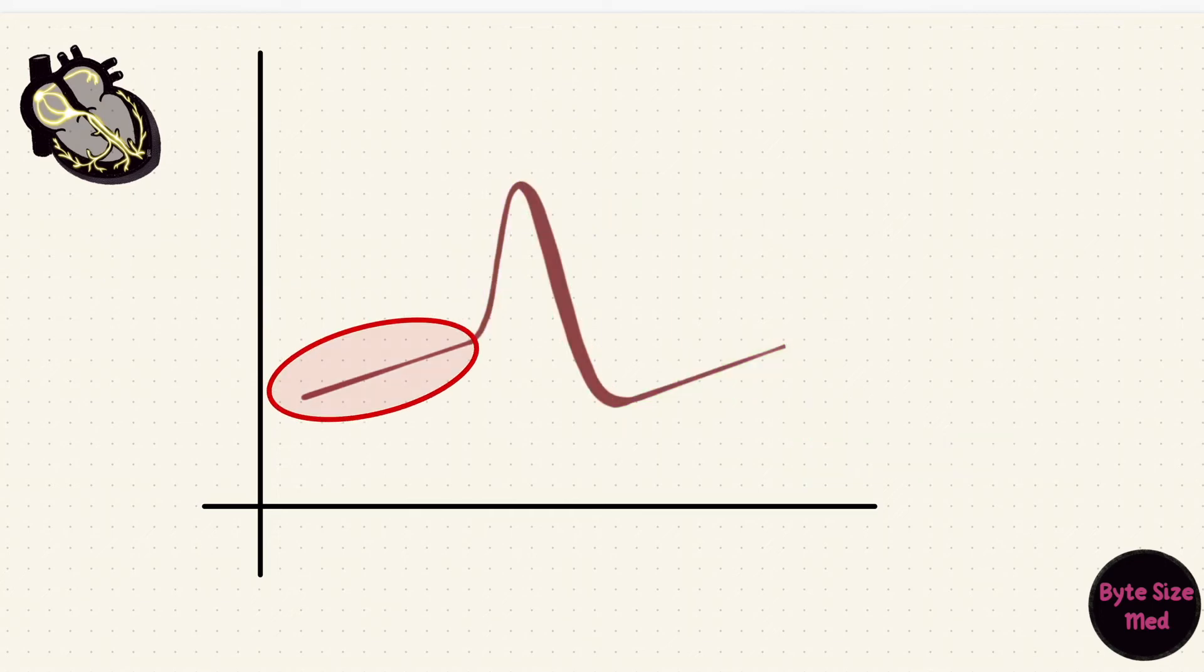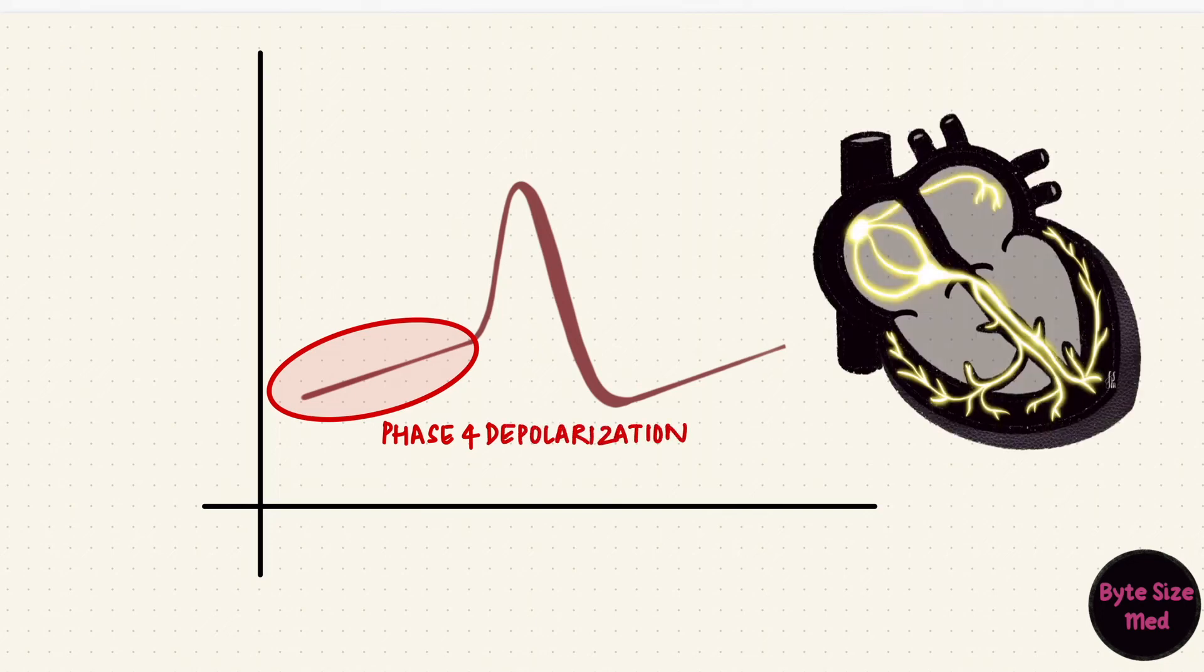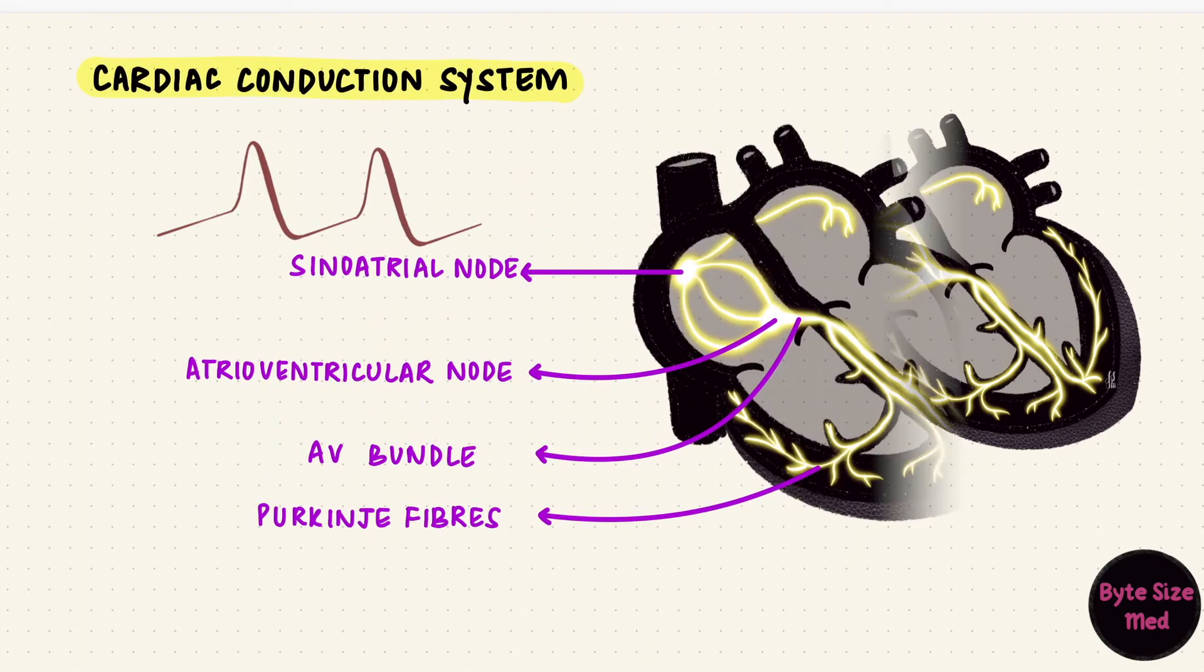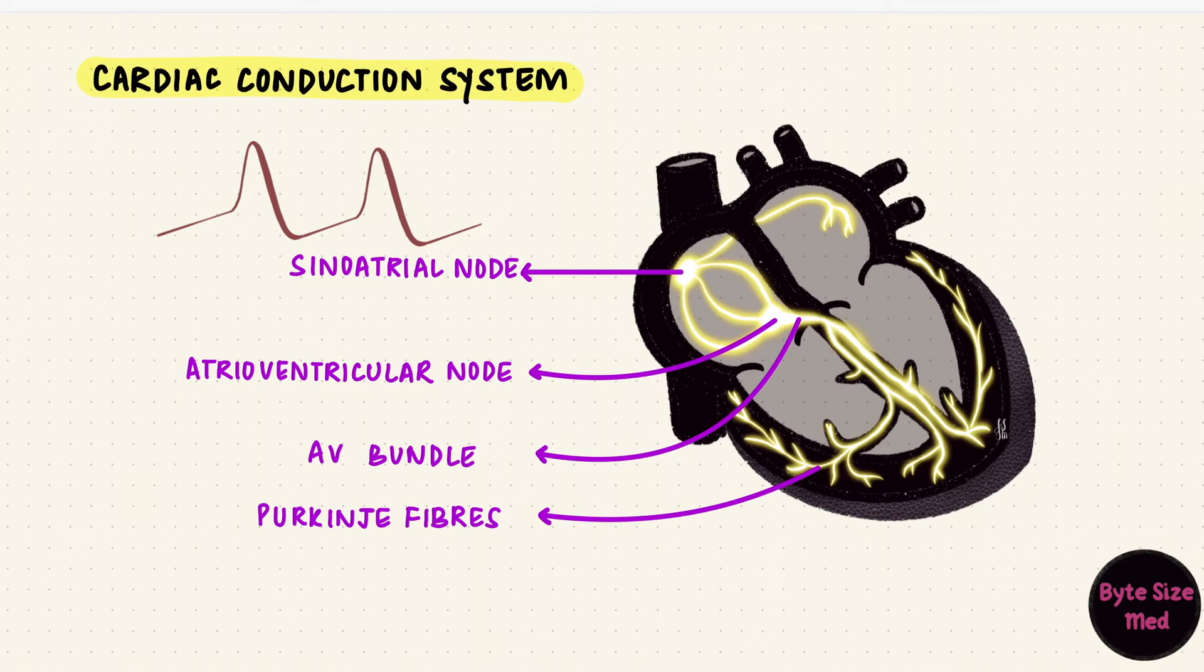This phase four depolarization is important. The structure which has the fastest rate of phase four depolarization will be the one to generate the impulse that then gets transmitted through the rest of the conduction system. The fastest rate of discharge happens mostly in the sinoatrial node, making that the pacemaker of the heart, because it sets the rhythm.